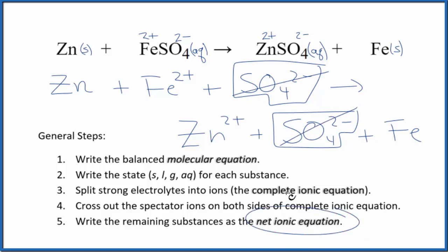What's left, that's the net ionic equation for zinc plus iron 2 sulfate. I'll clean it up and write the states in, and we'll have our net ionic equation.